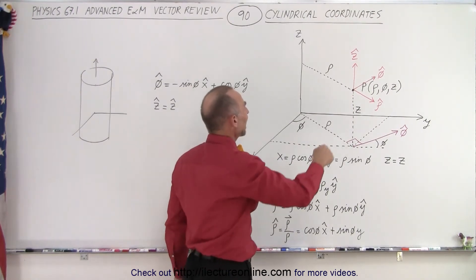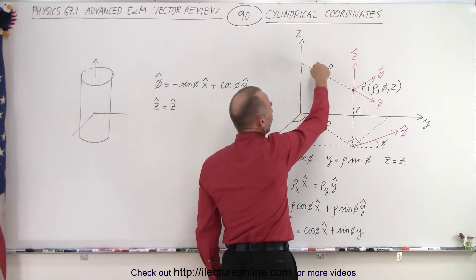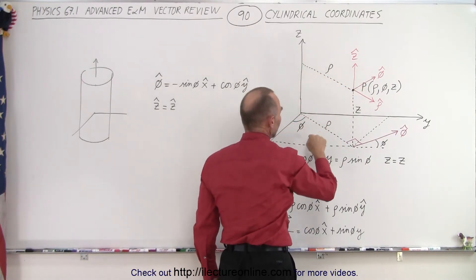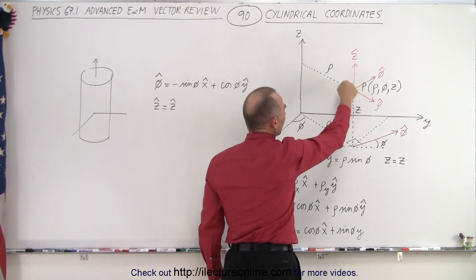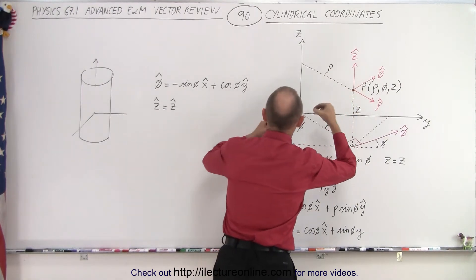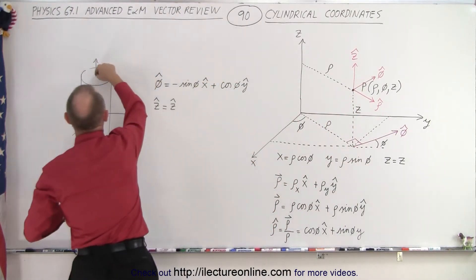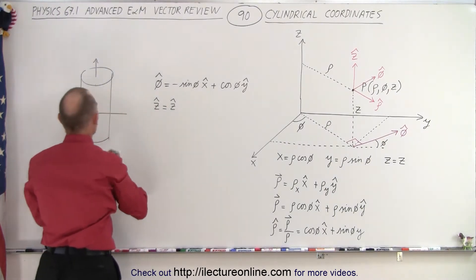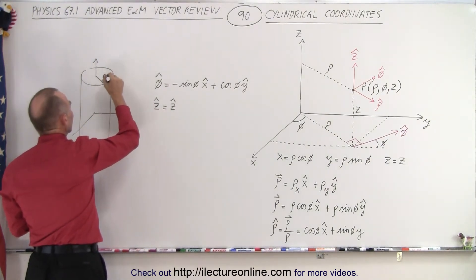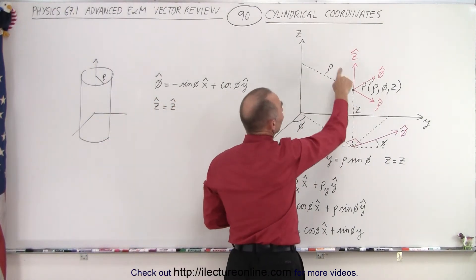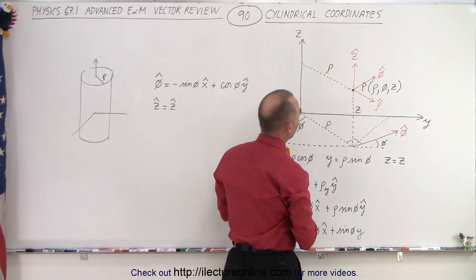What is different is that we have a vector or direction from the Z axis, parallel to the XY plane, to the point. That is the rho distance — the radial distance from the Z axis to the edge of the cylinder. That would be considered the rho distance, and it is one of the three components in cylindrical coordinates.